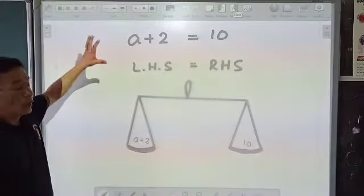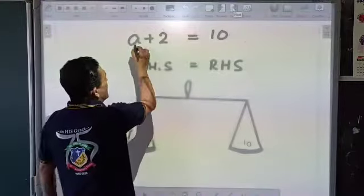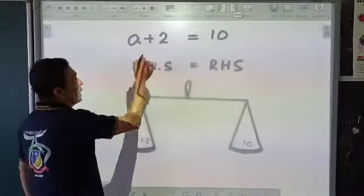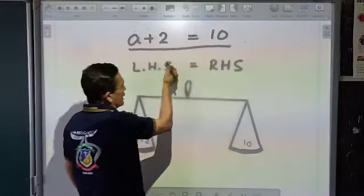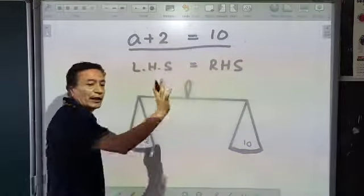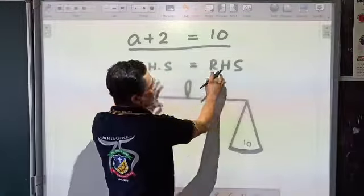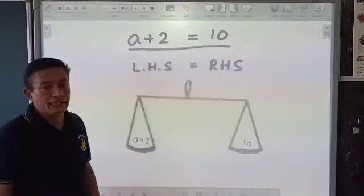Moving on, let's say we are given an equation a plus 2 is equal to 10. We are saying an equation has a left hand side and a right hand side. In the middle you will find an equal to sign, which means the left hand side is equal to the right hand side.